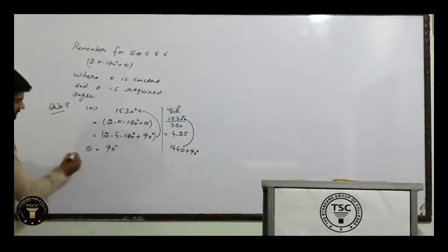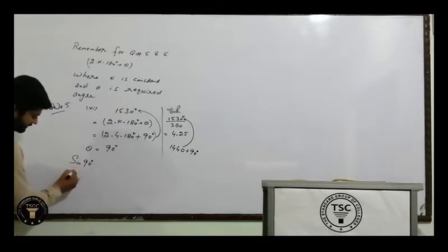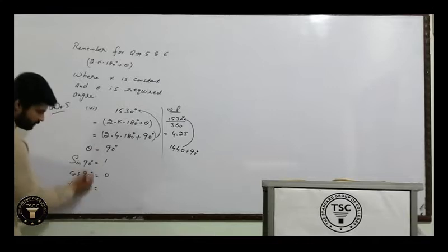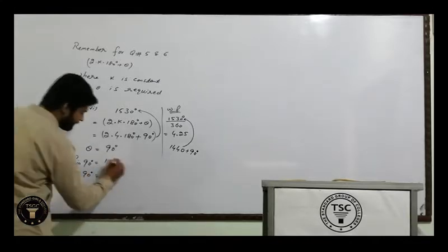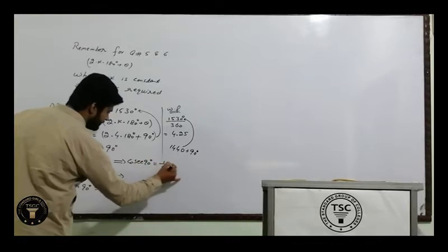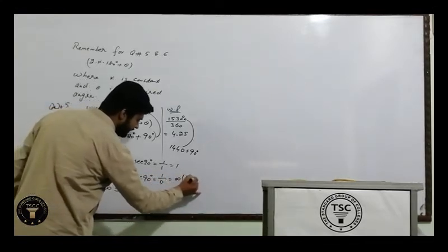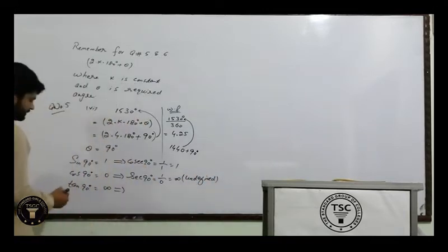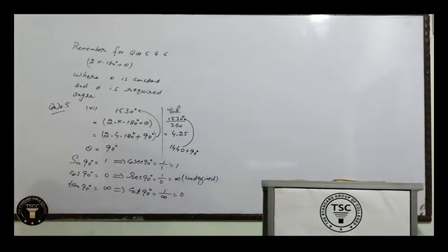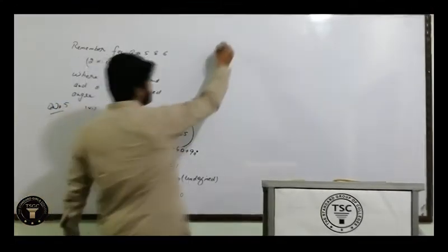Ab is 90° ki values find karo. Sin 90° = 1, cos 90° = 0, tan 90° = sin/cos = infinity (undefined). Reciprocals: cosecant 90° = 1/1 = 1, secant 90° = 1/0 = infinity (undefined), cotangent 90° = 1/infinity = 0. Yeh hamaara final answer hai — since question mein values find karni hain, values bhi show karni hain.